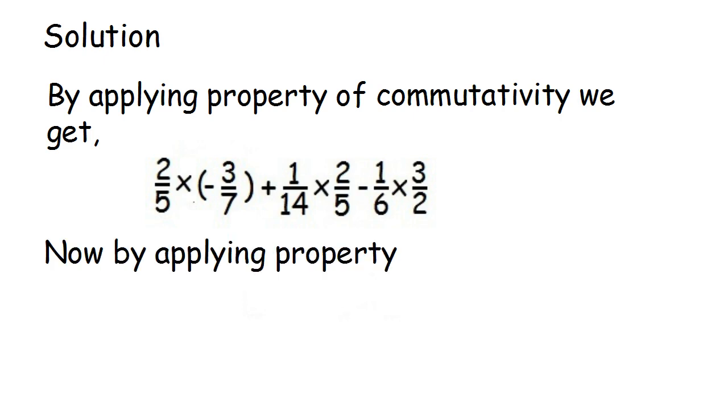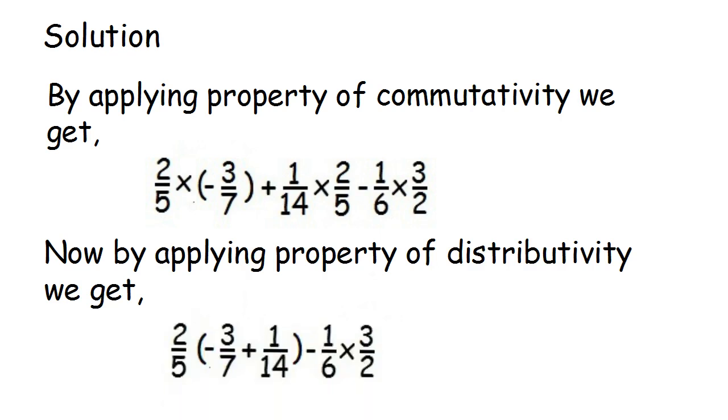Now by applying property of distributivity we get 2 by 5 is the common rational number and hence take it out of the bracket.